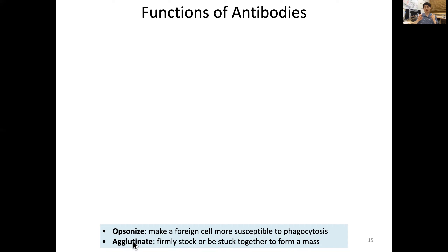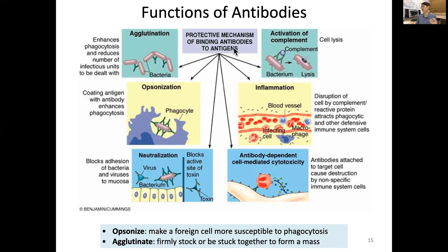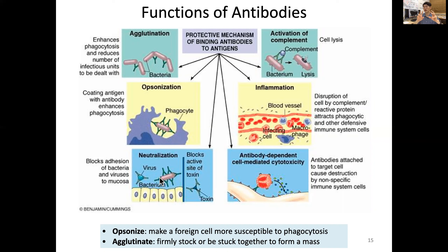Agglutination is when antibodies stick pathogens together into a mass. Because antibodies have multiple valences, they can grab multiple bacteria together, enhancing phagocytosis and reducing the number of infectious units. Opsonization coats antigens so that phagocyte cells can more easily engulf them. Antibodies can also directly interact with toxins, viruses, or bacteria to neutralize them — blocking their active sites so they cannot enter host cells.